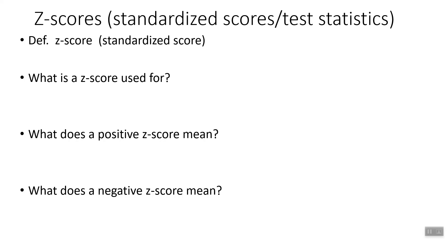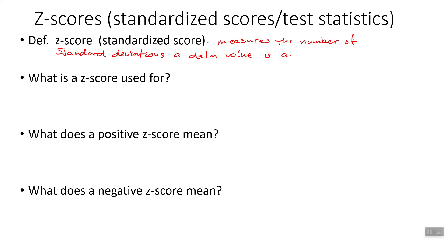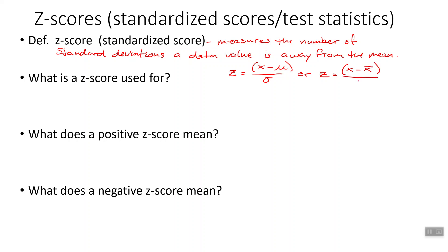This brings up the idea of a standardized score or a z-score. A z-score or standardized score measures the number of standard deviations a value is away from the mean. This is going to be a very useful tool going forward. Anytime we want to compare two different distributions, we can look at their z-scores. The formula: z equals the x value — the data value — minus the mean, divided by the standard deviation. Or if we're working with sample data, z equals x minus x-bar over the sample standard deviation s.